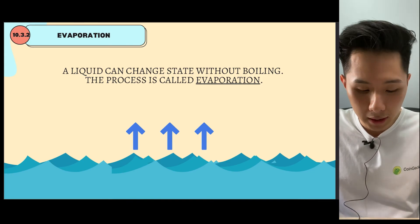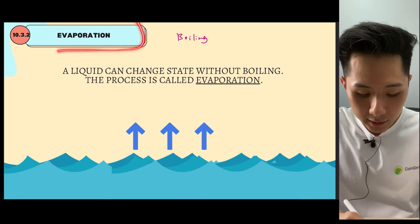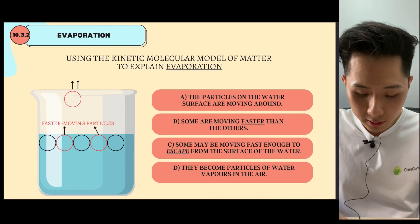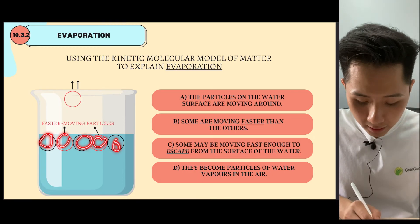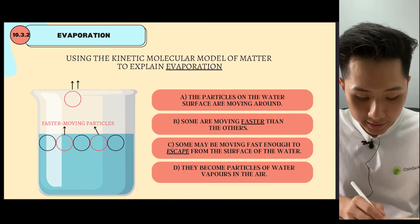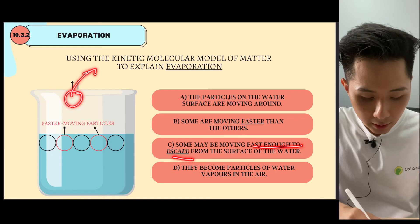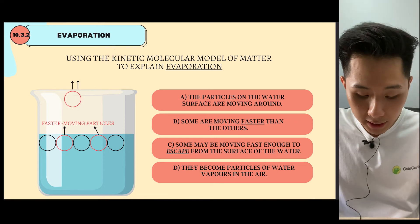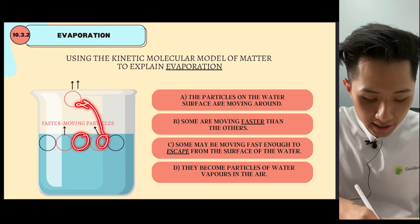Let's look into another form of changing state. Previously we learned about boiling; now we learn about evaporation. Liquid can also change state without boiling — this process is called evaporation. Using the kinetic molecular model of matter to explain evaporation: imagine these are the particles in liquid. The particles on the water surface are moving around, and some will be moving faster than others. Those that move fast enough will escape from the liquid and become gas particles in the air. That's how evaporation happens — if you put a cup of water in the balcony, a week later you'll find it has evaporated.